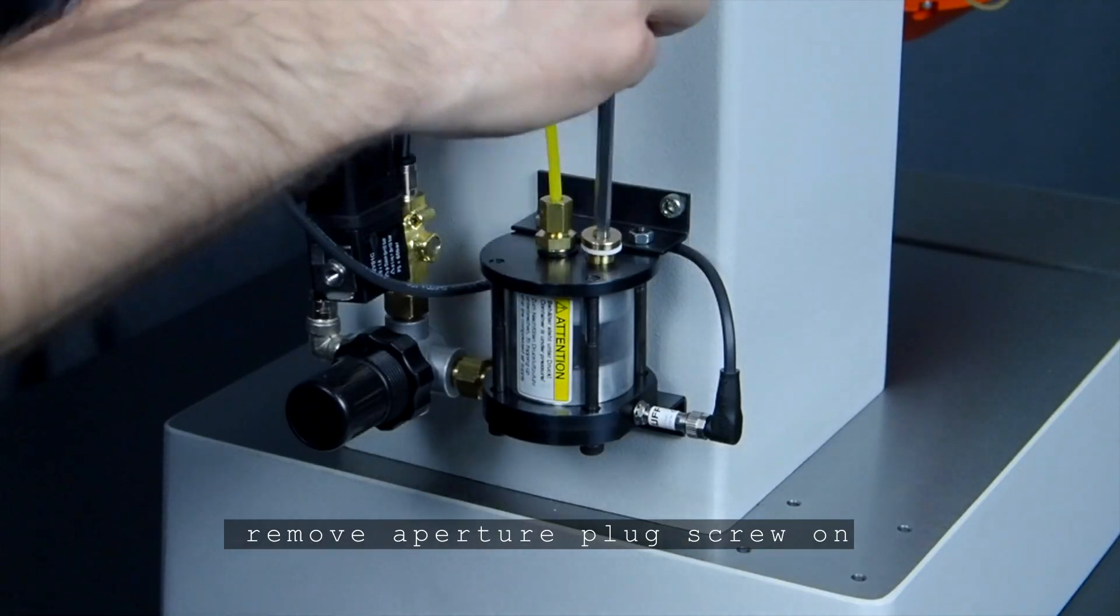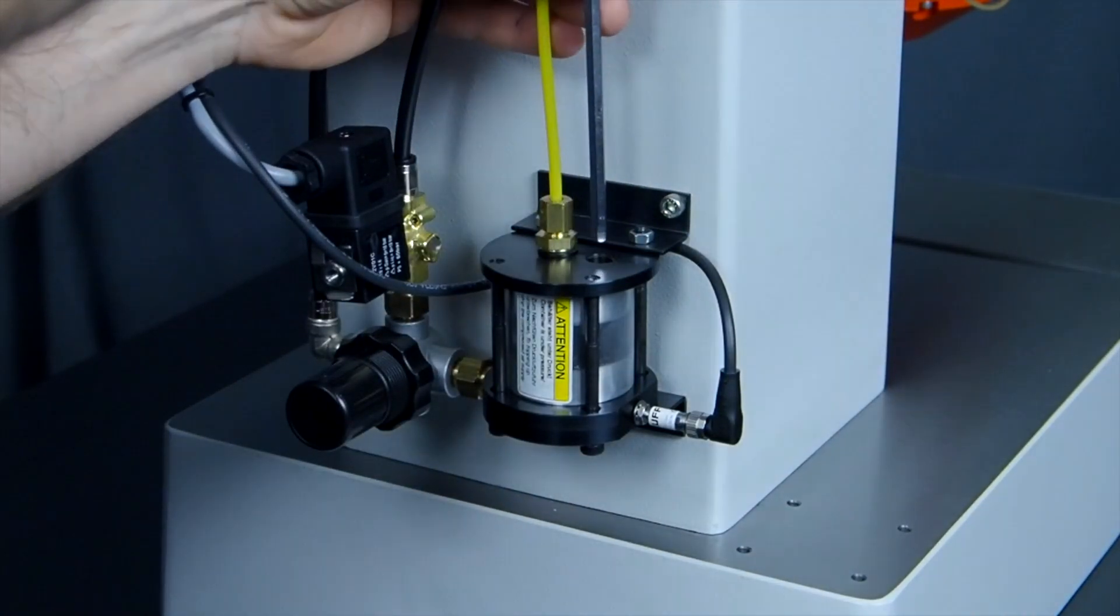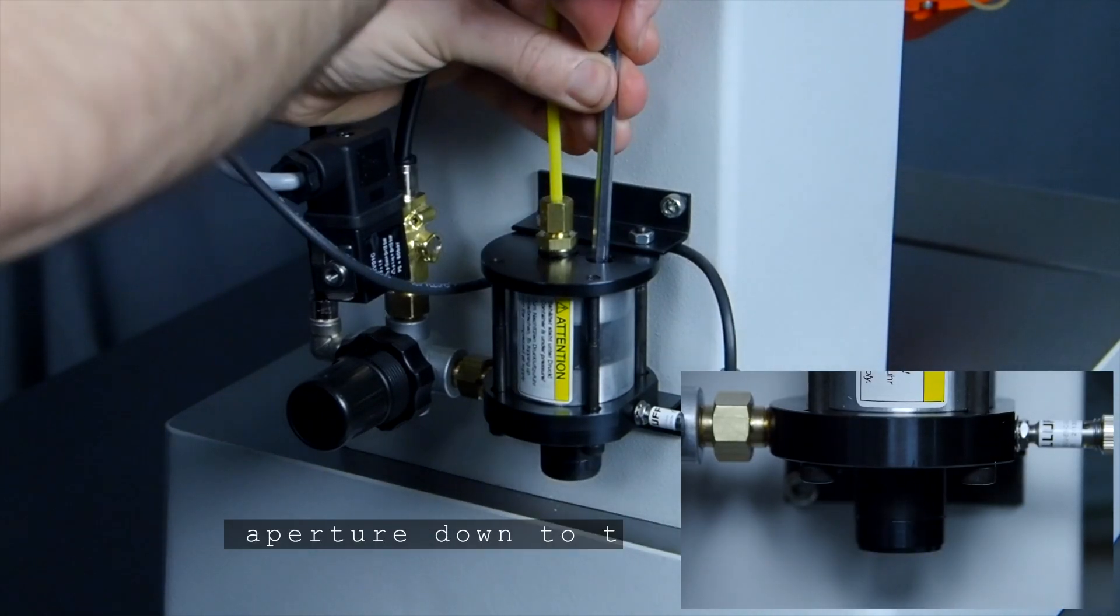Remove the aperture plug screw on the grease container. Push the piston through the aperture down to the stop.